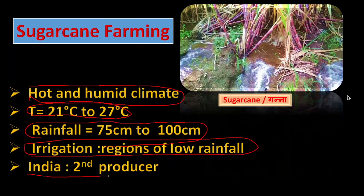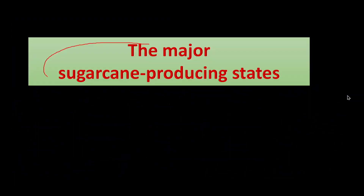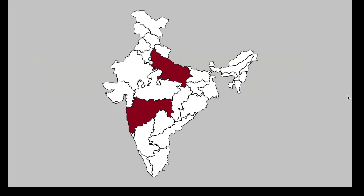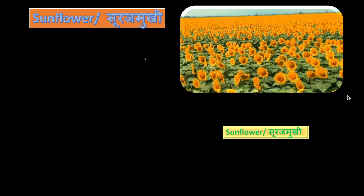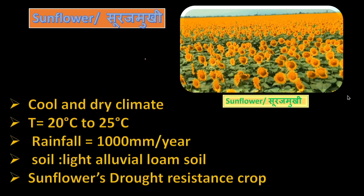India is the second largest producer of sugarcane, only after Brazil. The major sugarcane producing states are Maharashtra, Uttar Pradesh, Karnataka, Tamil Nadu, Andhra Pradesh, Telangana, Bihar, Punjab, and Haryana.